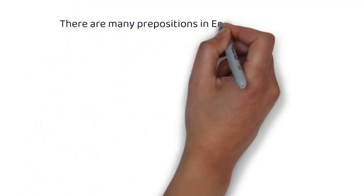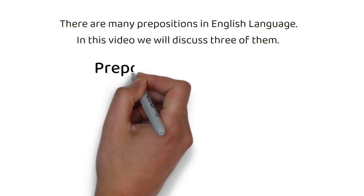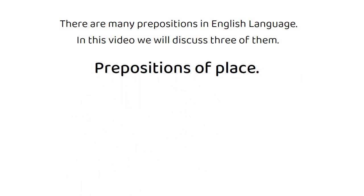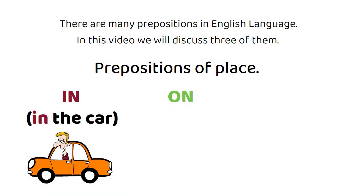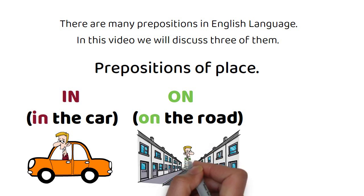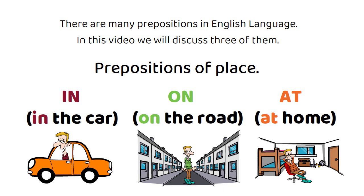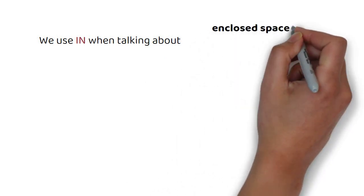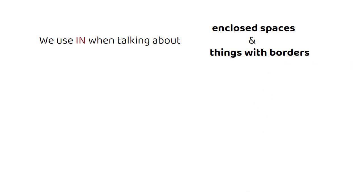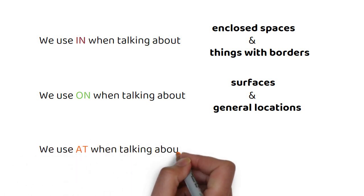There are many prepositions in the English language. In this video we will discuss three of them. We will learn all the rules for the most common prepositions of place, such as in — for example, in the car — on — for example, on the road — and at — for example, at home. We use in when talking about enclosed spaces and things with borders. We use on when talking about surfaces or when speaking about general locations. And we use at when talking about specific locations.